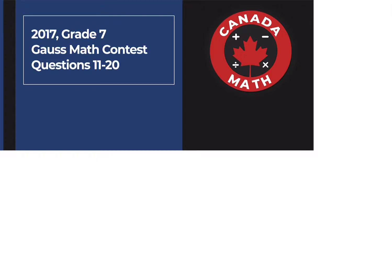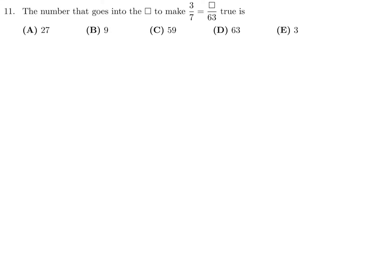Questions 11 through 20 on the 2017 Grade 7 Gauss Math Contest. The number that goes into the box to make 3 over 7 equals box over 63 true - we'll call that X. So 3 over 7 is equal to X over 63. Cross multiply and you get 3 times 63 is equal to 7X. Therefore X is equal to 3 times 63 over 7, and when you do that math you get 27 for the value of X.